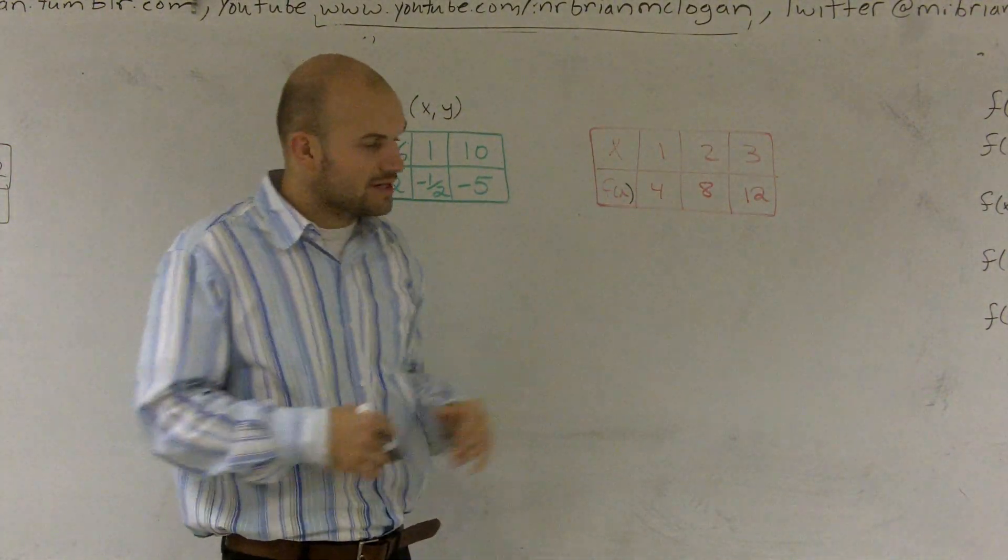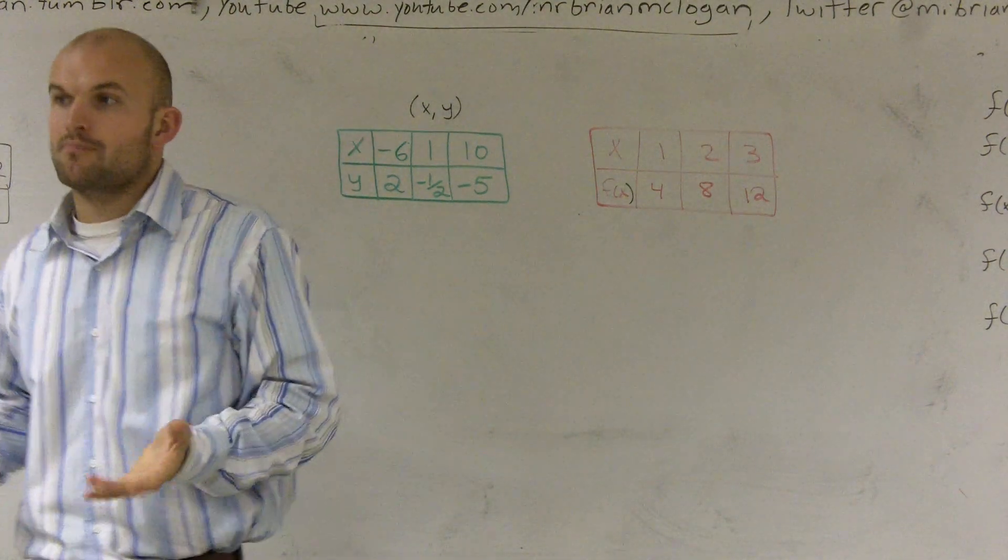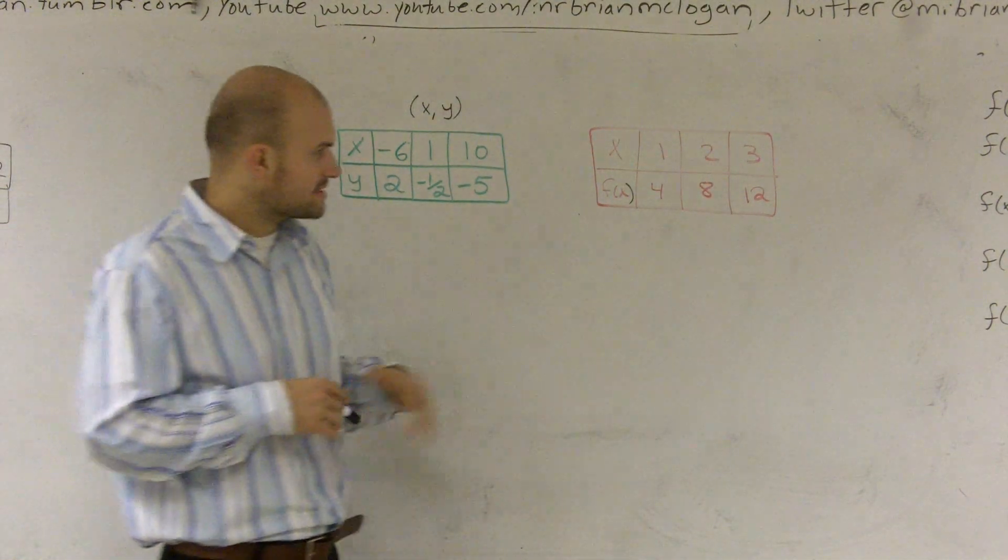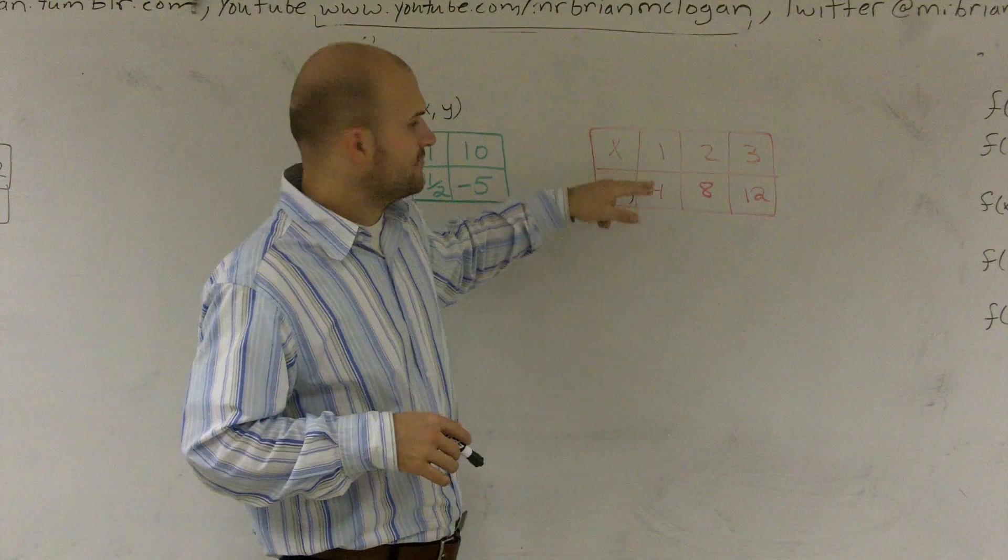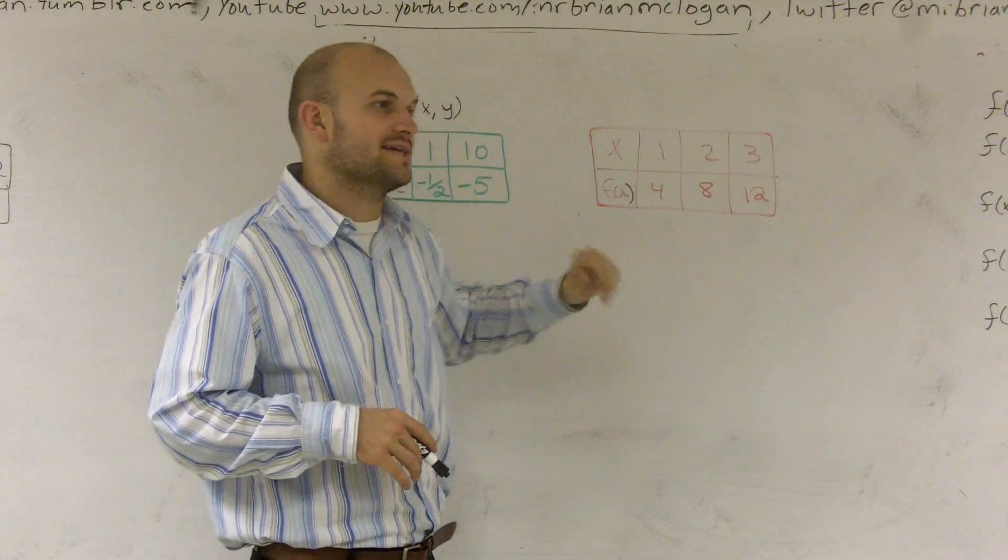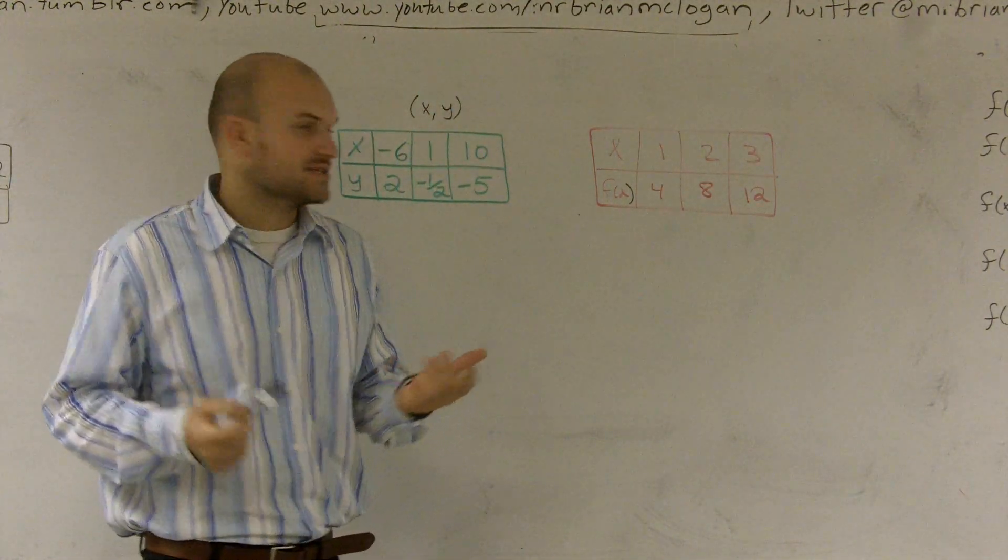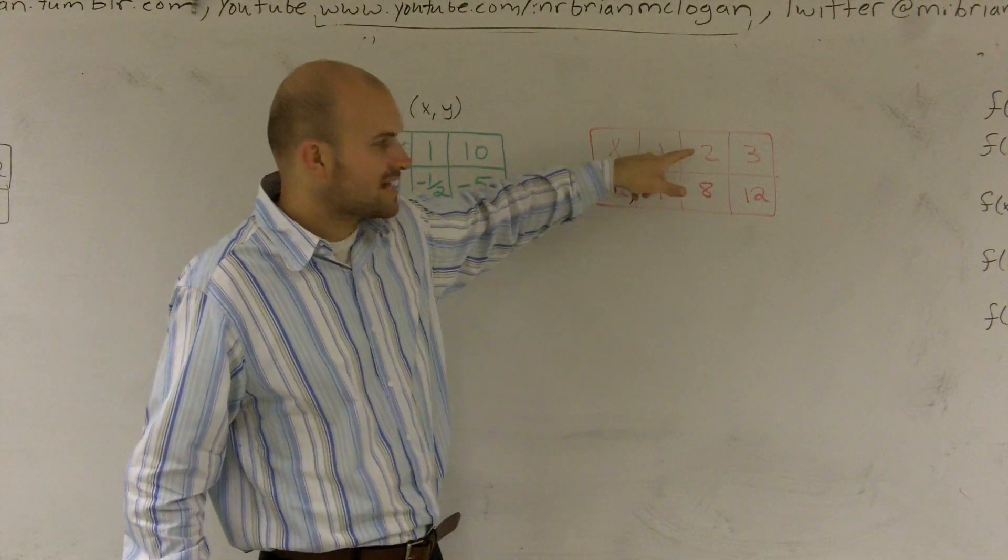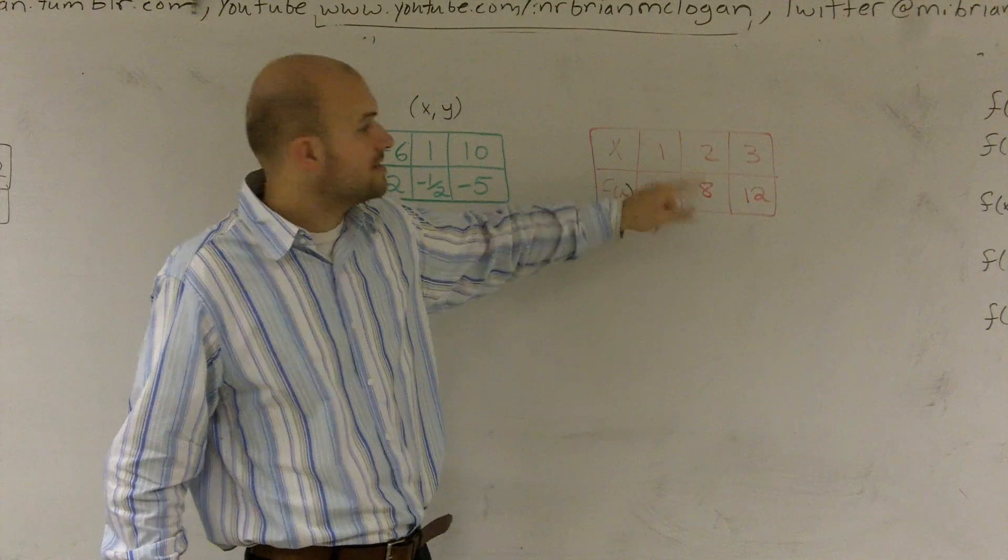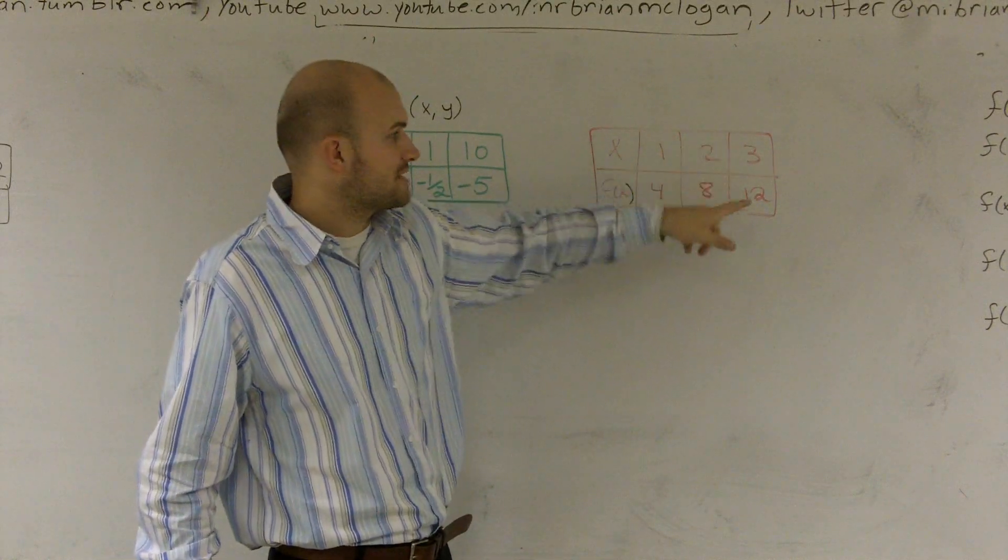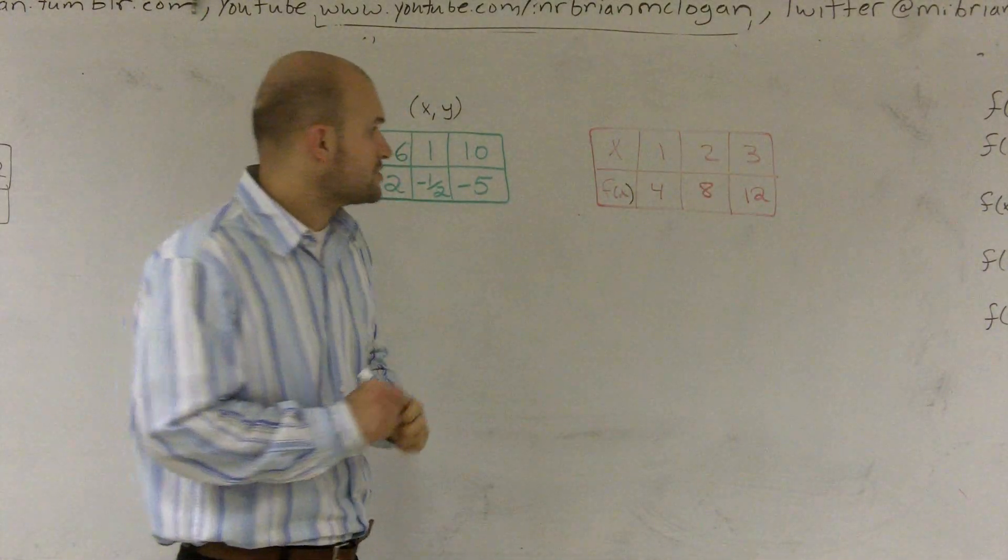So now I'm going to have to look for multiplication. So I say, all right, if I have 1 to 4, what do I have to do to 1 to get to 4? And I say I have to multiply by 4. And let's see if that stays true for the rest of my x values. If I multiply 2 times 4, does that give me 8? Yes. If I multiply 3 times 4, does that give me 12? Yes.